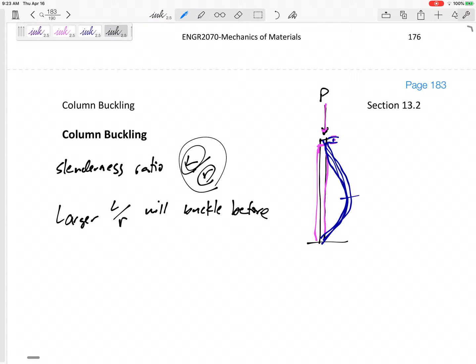So larger L over R ratios will buckle before yielding.